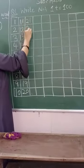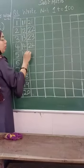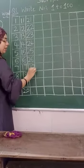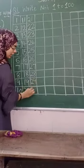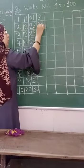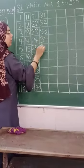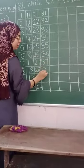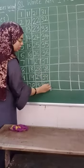2, 1, 21. 2, 2, 22. 2, 3, 23. 2, 4, 24. 2, 5, 25. 2, 6, 26. 2, 7, 27. 2, 8, 28. 2, 9, 29. 3, 0, 30. 3, 1, 31. 3, 2, 32. 3, 3, 33. 3, 4, 34. 3, 5, 35. 3, 6, 36. 3, 7, 37. 3, 8, 38. 3, 9, 39. 4, 0, 40.